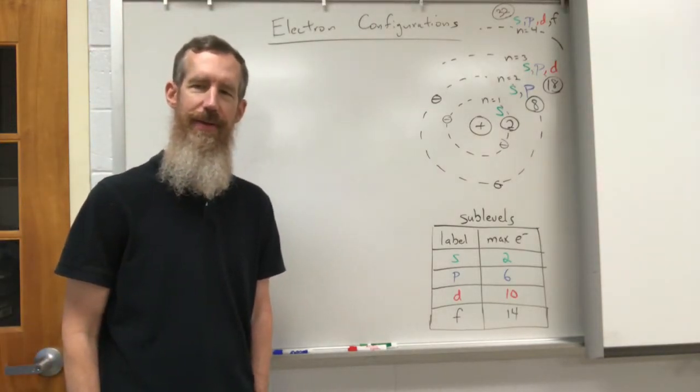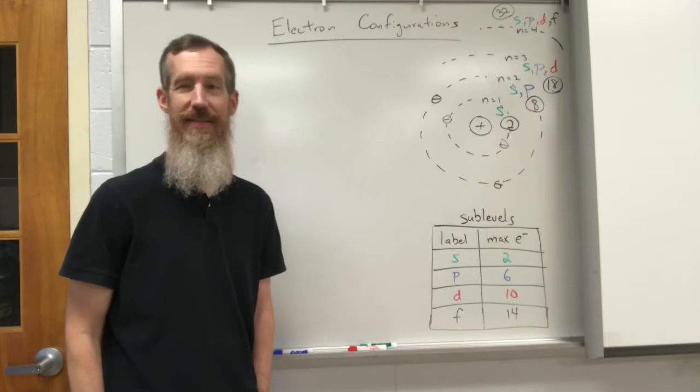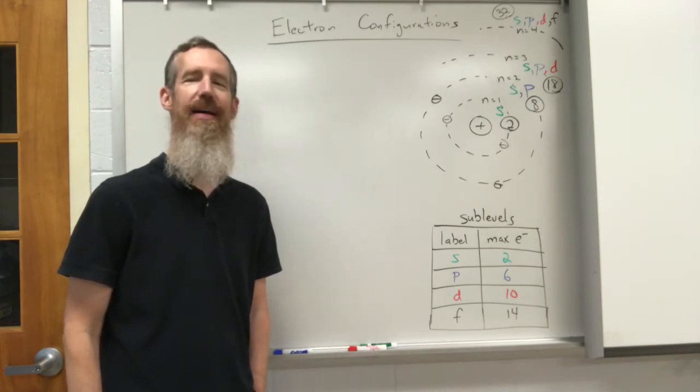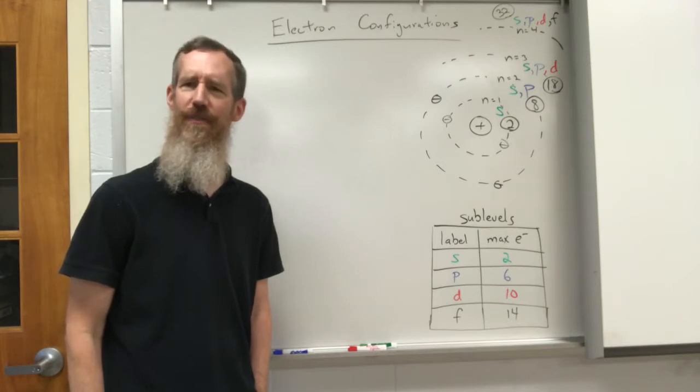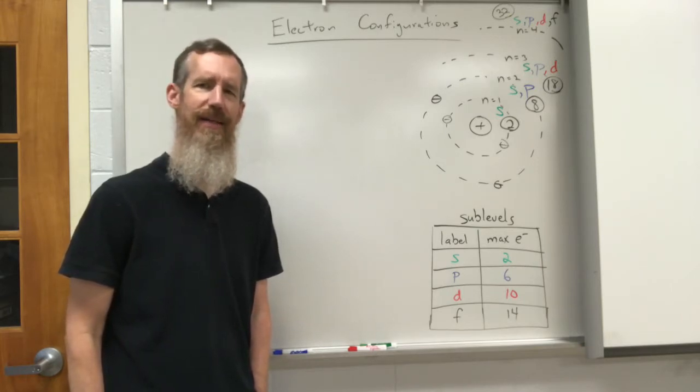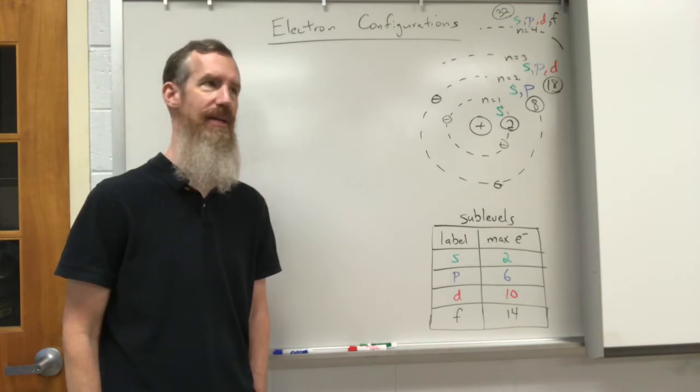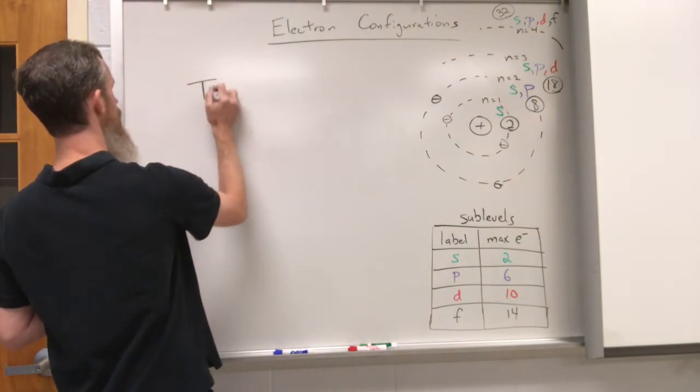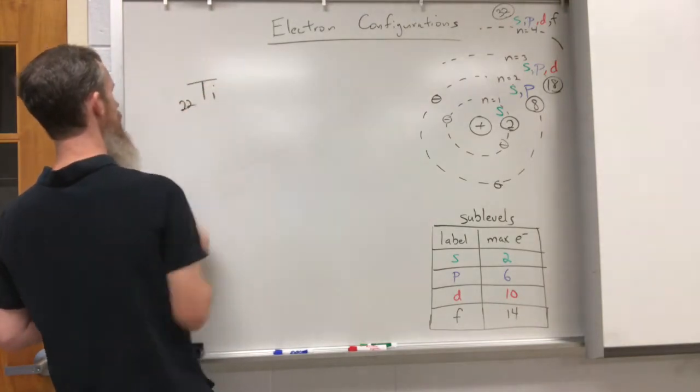So continuing with electron configurations, let's have some fun with this. Let's start off by example and go to titanium, atomic number 22. Titanium, Ti, very nice strong lightweight metal.